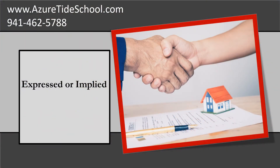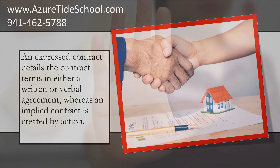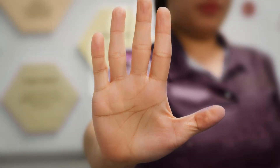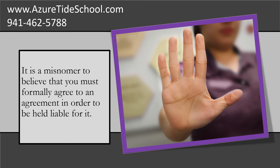Expressed or Implied. An expressed contract details the contract terms in either a written or verbal agreement, whereas an implied contract is created by action. It is a misnomer to believe that you must formally agree to an agreement in order to be held liable for it.